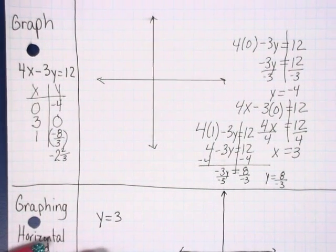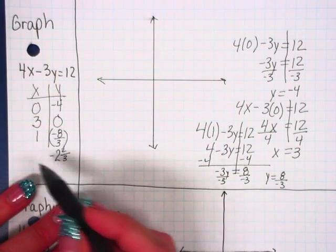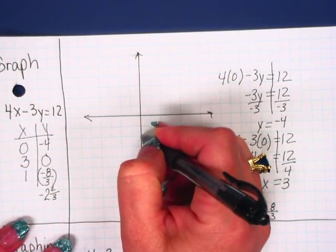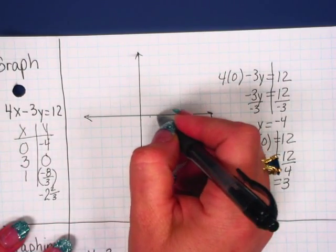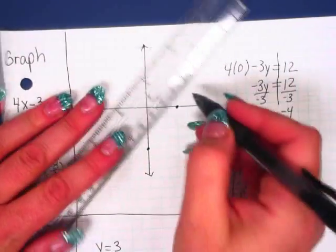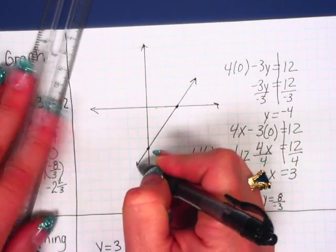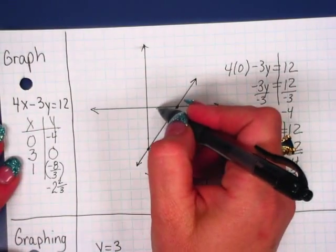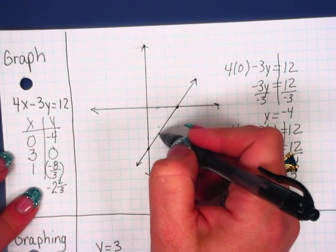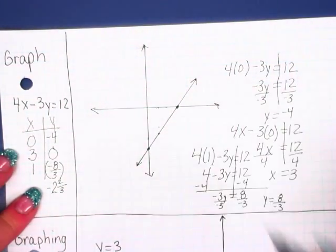All right, so when x is 1, we get negative 8 thirds, which we're going to think of as negative 2 and 2 thirds because it'll make it easier to graph. So we have 0, negative 4. 3, 0. And then when it's a fraction, what you might want to do is graph the line and use the fraction one as kind of just your checkpoint. So 1 and 2, negative 2 and 2 thirds. That's pretty close to 2 and 2 thirds. So I'm not worried. I'm thinking I'm pretty much on track for where it should be.